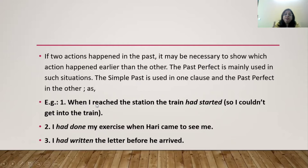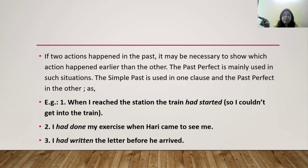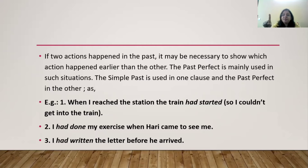For example, 'When I reached the station, the train had started.' The starting of the train had already happened — it is the earlier action. 'I reached the station' is the second, newer action. 'I had done my exercise when Hari came to see me' — Hari's coming was after I had done my exercise. 'I had written the letter before he arrived' — my writing of the letter was done before the other person arrived.